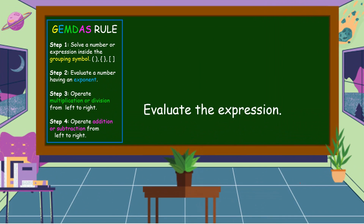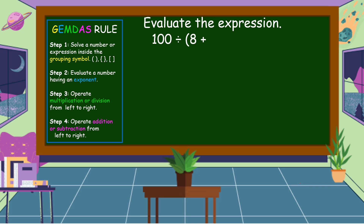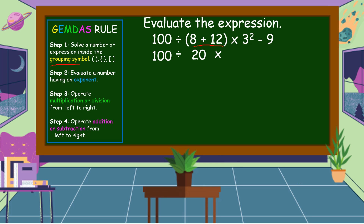Next example: 100 divided by open parenthesis 8 plus 12 close parenthesis times 3 squared minus 9. First, we're going to solve the number or expression inside the grouping symbol. We have 8 plus 12 here. Bring down first: 100 divided by — 8 plus 12 is equal to 20 — then bring down times 3 squared minus 9.